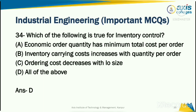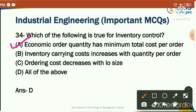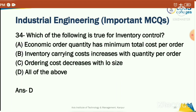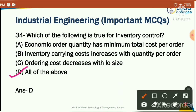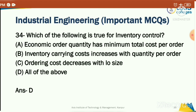Which of the following is true for inventory control? Option: economic order quantity has minimum total cost per order. The correct answer is option D: all of the above.